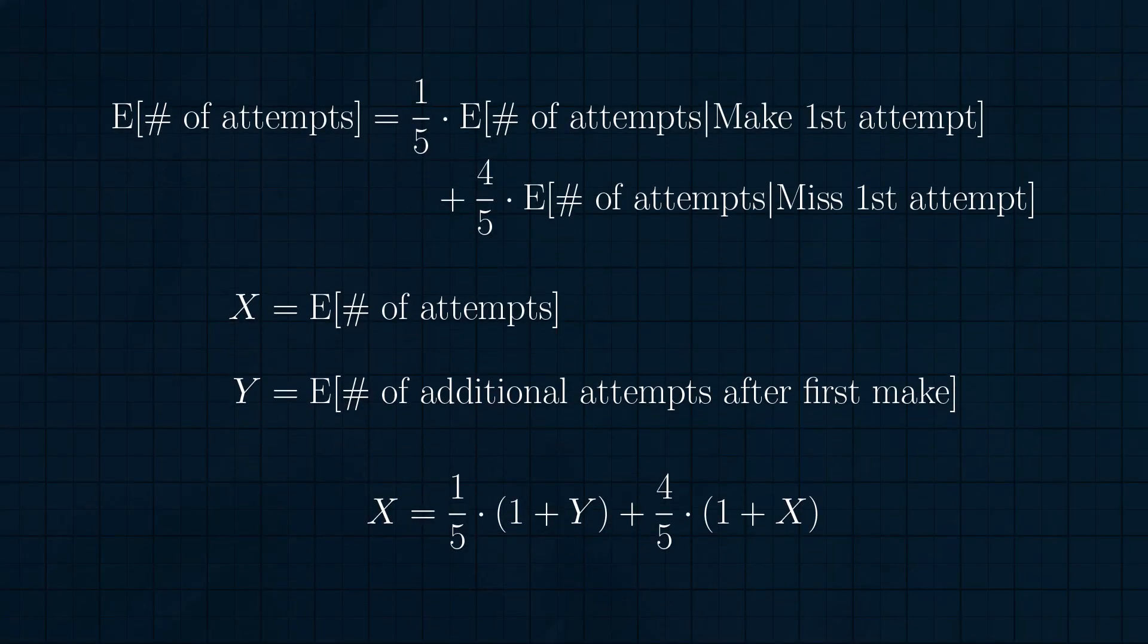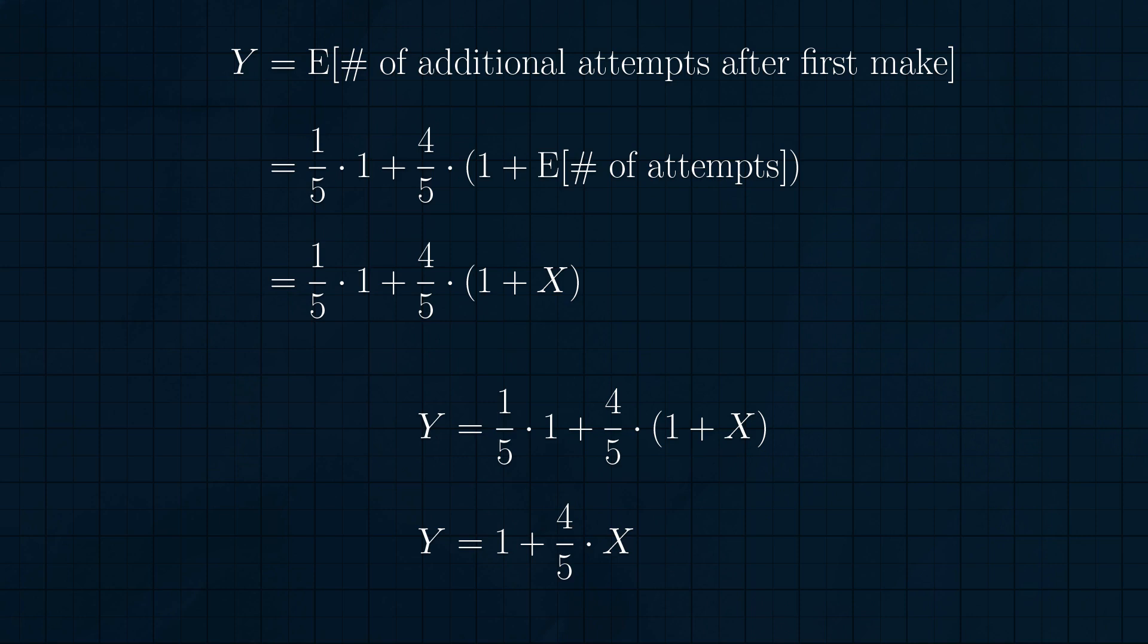Now we have a second possible state for Danielle to be in, where she's just made a single half-court shot and is shooting for her second in a row. So let's call x the expected number of attempts overall, and y the expected number of additional attempts Danielle needs given she just made a half-court shot. So this equation becomes x equals one-fifth times one plus y plus four-fifths times one plus x. But now we have two unknowns and only one equation, so now we should analyze y in the same way. If we've just made a half-court shot, we have a one-fifth chance to require only one more shot, and a four-fifths chance of missing, and so wasting a shot and landing back at square one. In terms of x and y, y equals one-fifth times one plus four-fifths times one plus x. So y equals one plus four-fifths x.